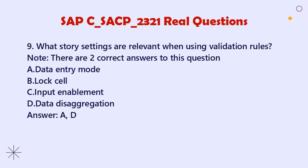Question 9: What story settings are relevant when using validation rules? Note: There are two correct answers. A. Data entry mode. B. Lock cell. C. Input enablement. D. Data disaggregation. Answer: A, D.